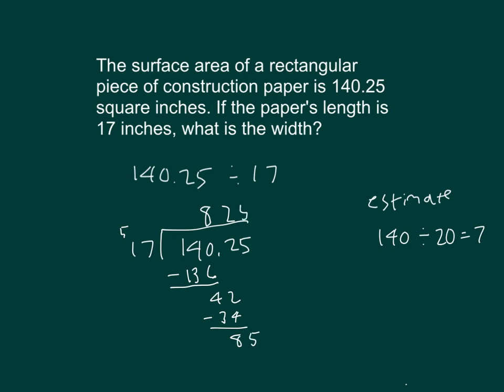That goes in 5 whole times. 5 times 17 is 85, and 85 minus 85 is 0. So, our paper's width is 8.25 inches, or 8 and 25 hundredths inches long.